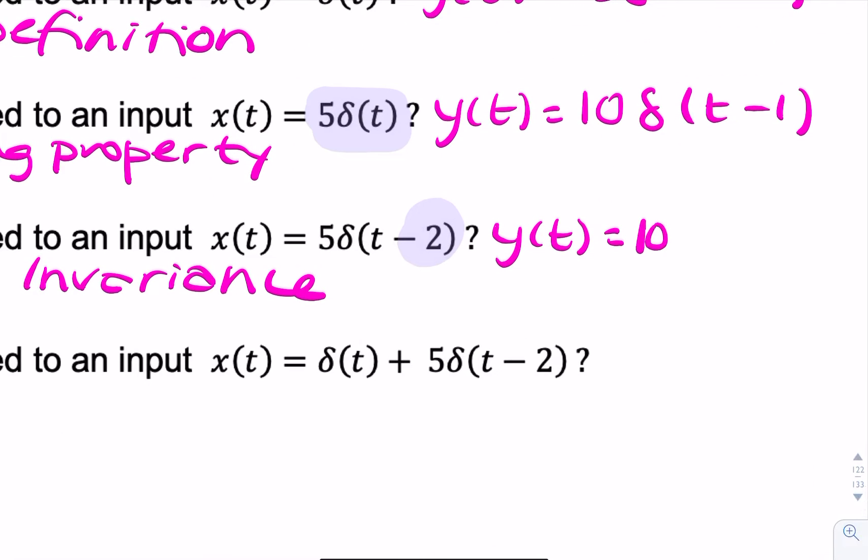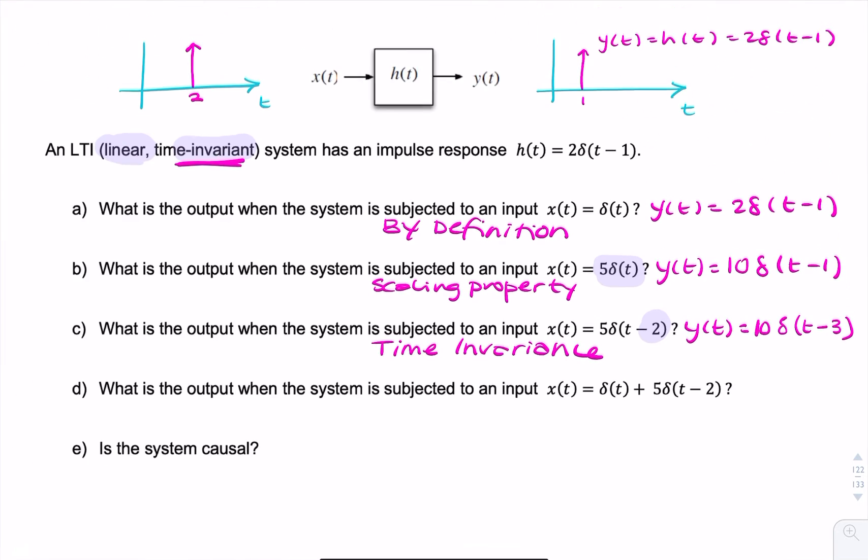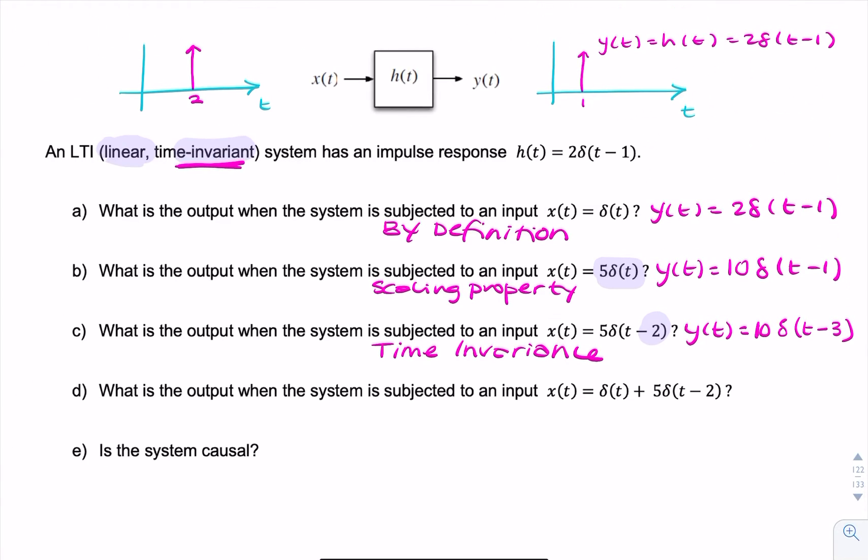It'll be 10 times an impulse at (t-1-2). So that minus 2 is that minus 2. And then we can simplify that and say t minus 3. So 2 seconds coming from here and 1 second from the original impulse response. That would be the output for part C.